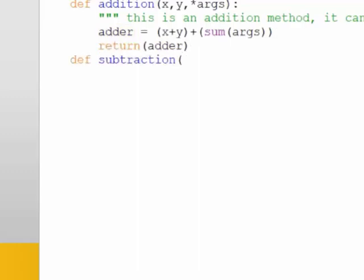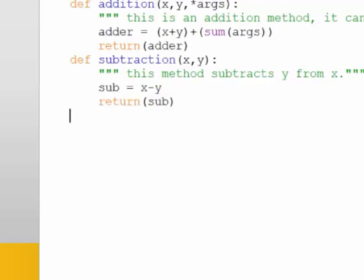We can do the same procedure for subtraction, multiplication and division methods. We write a text here as a help text. Then we declare a variable and this variable is called sub which subtracts one variable from the other. Then return sub.